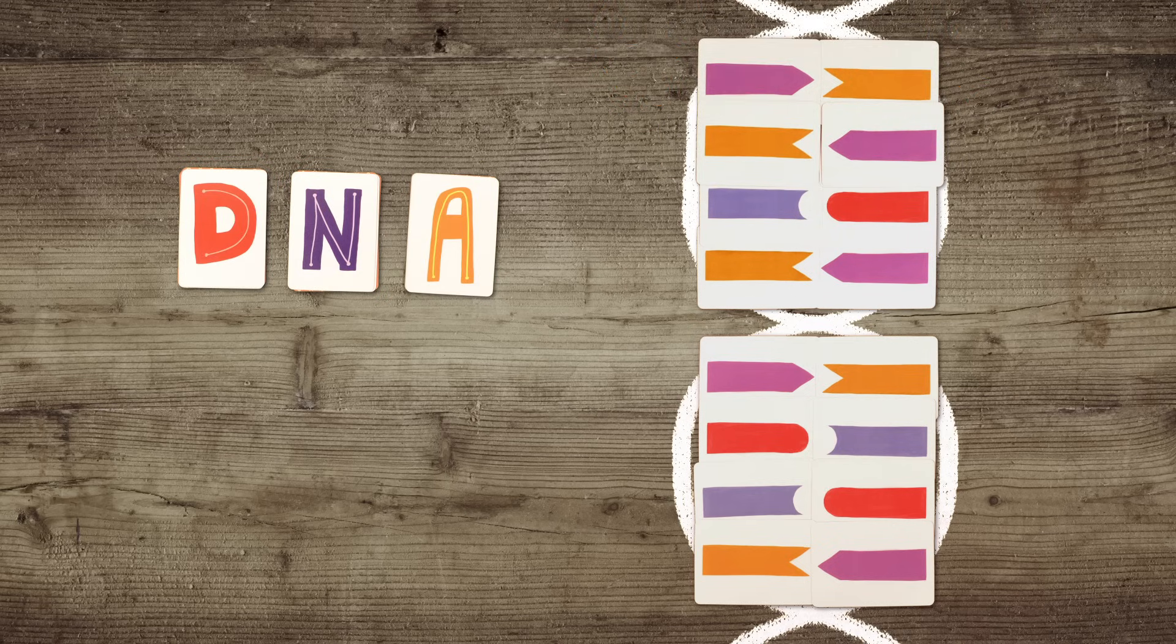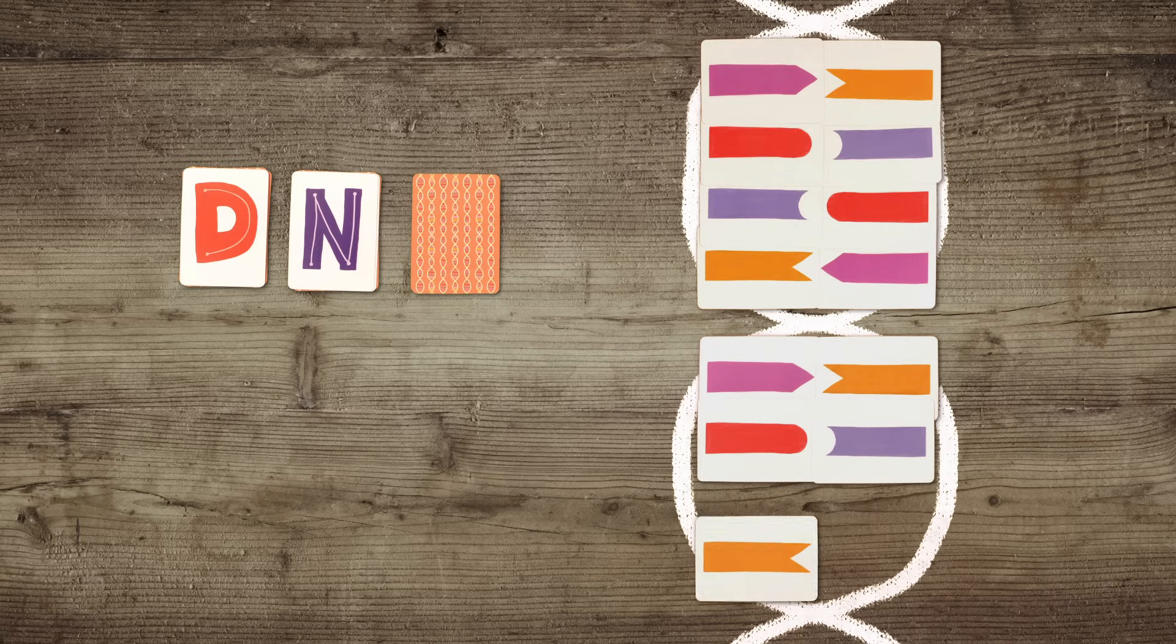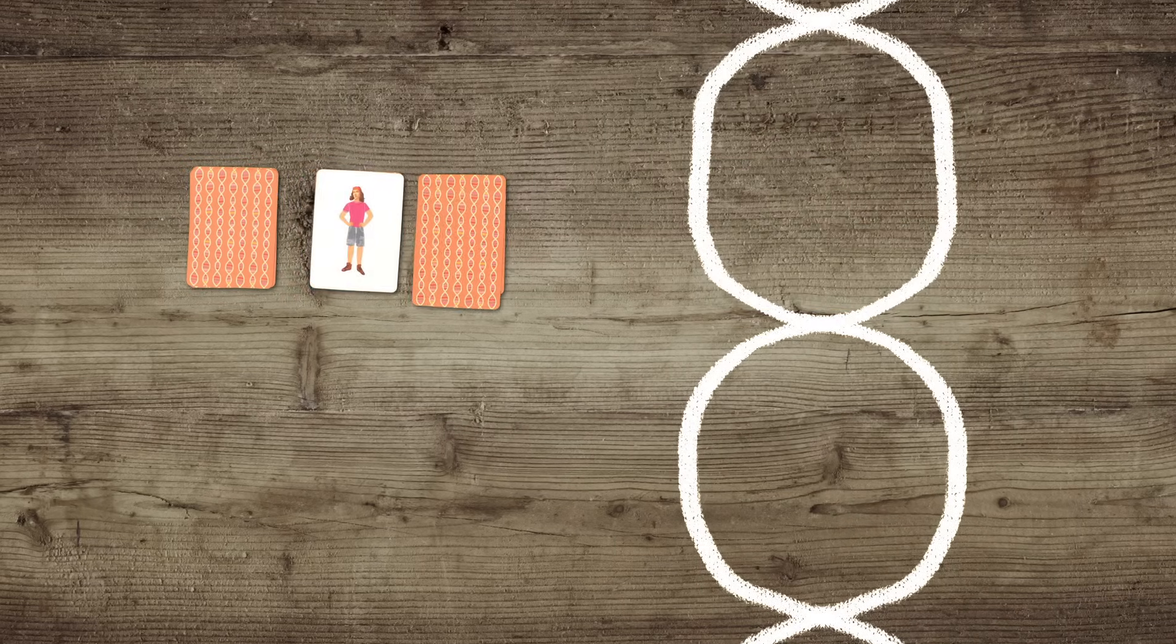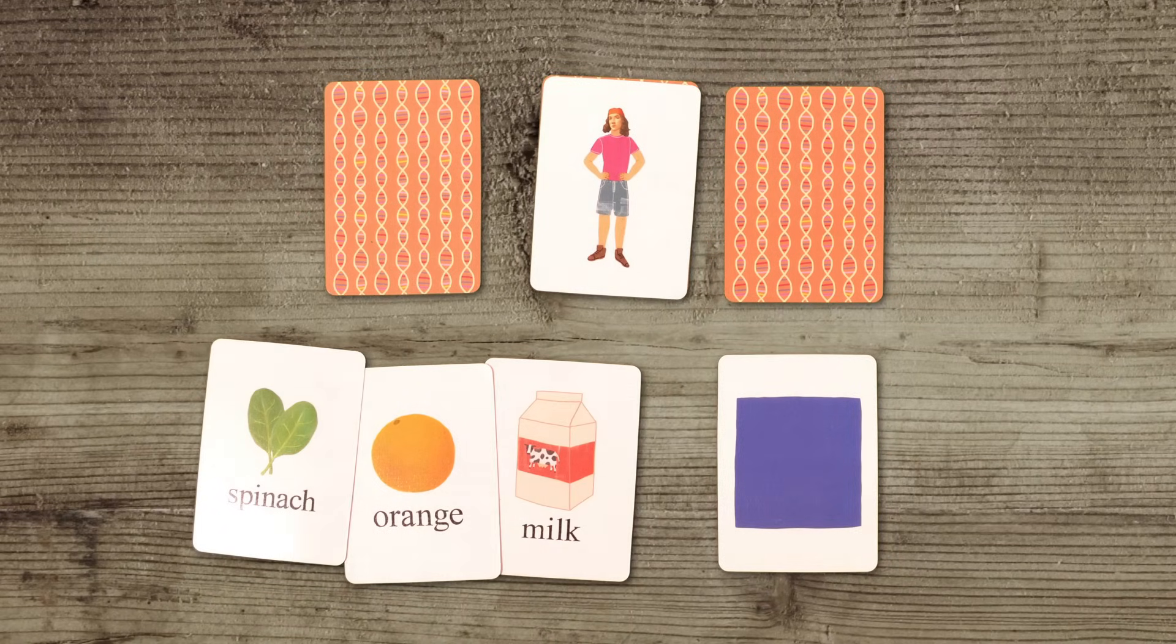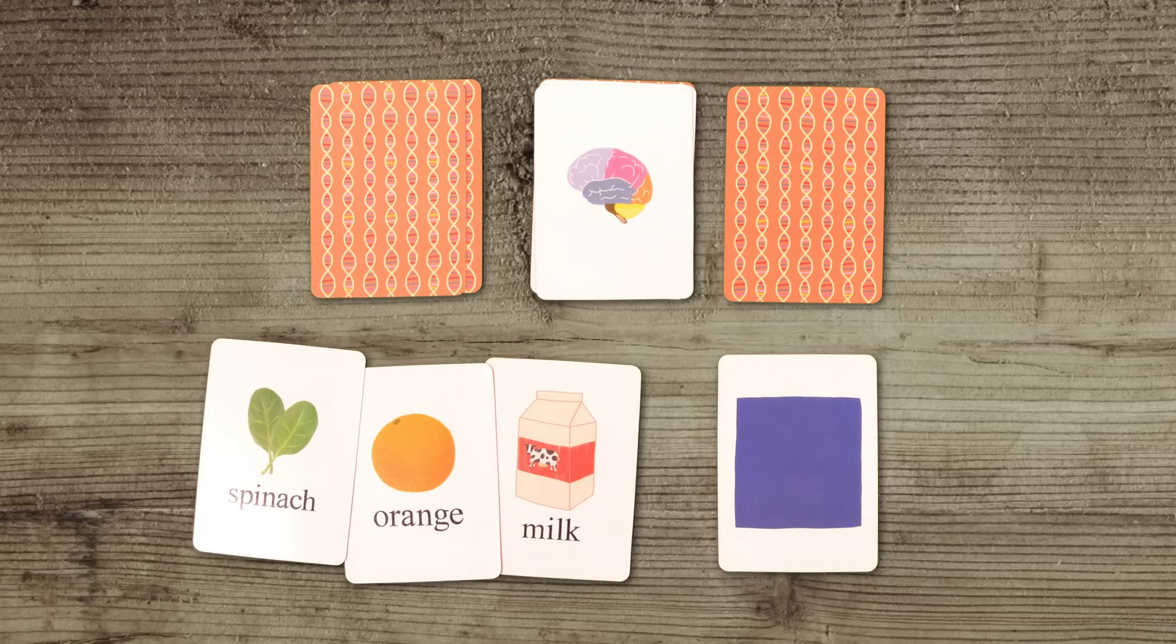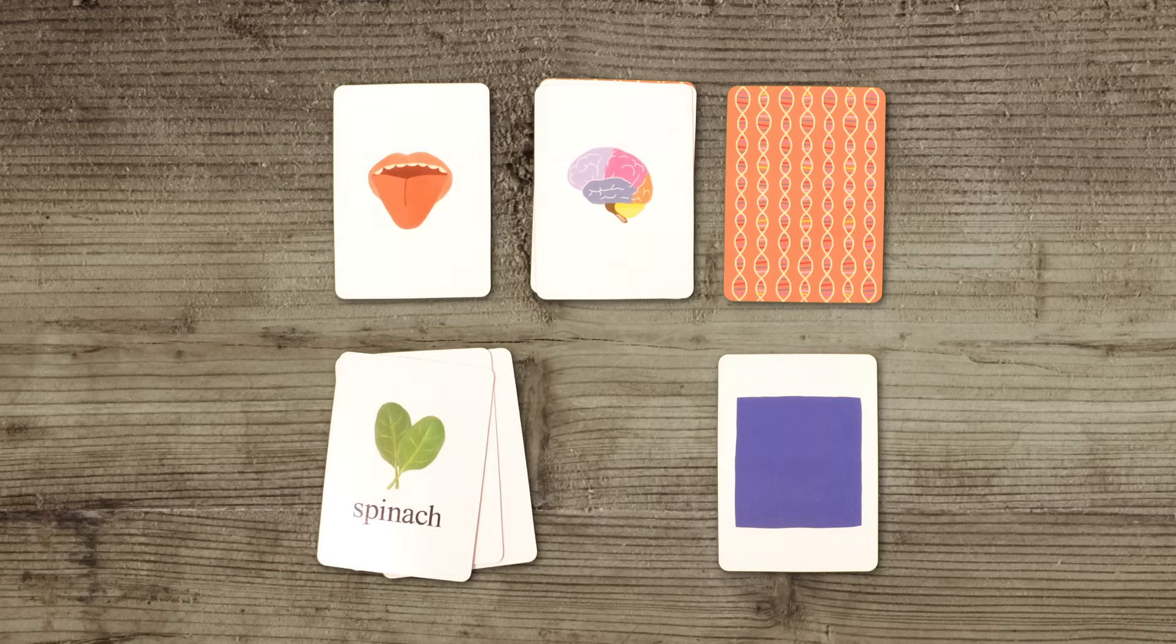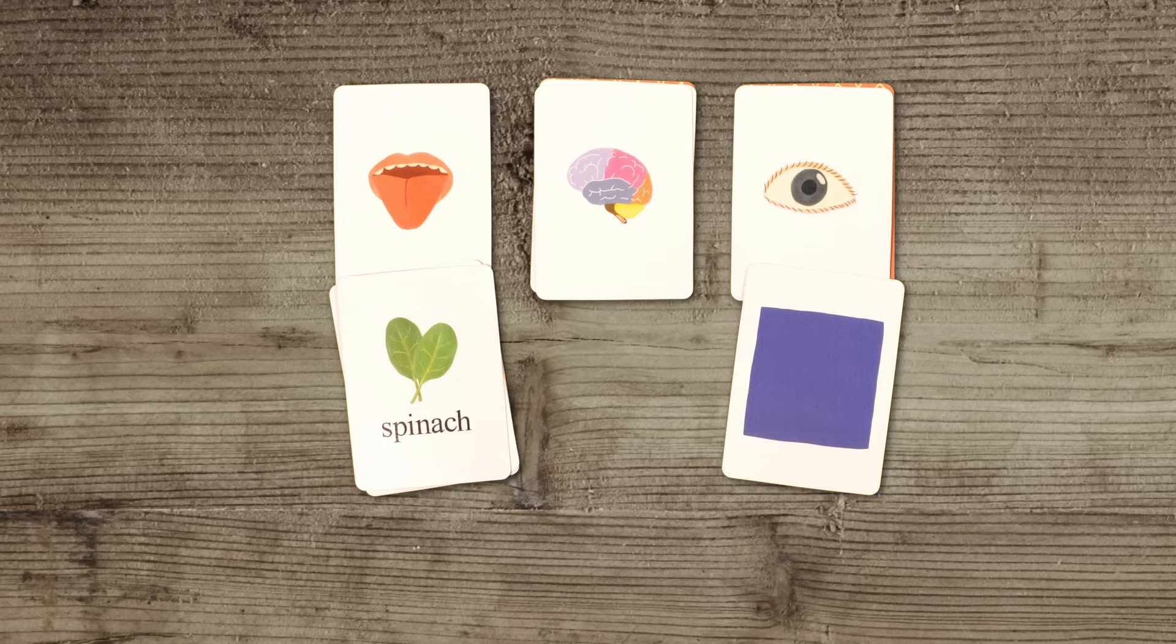In this way, synesthesia provides a path to understanding subjective differences, how two people can see the same thing differently. Take Sean, who prefers blue-tasting foods such as milk, oranges, and spinach. The gene heightens normally occurring connections between the taste area in his frontal lobe and the color area further back.